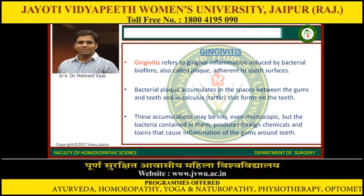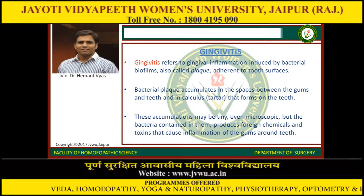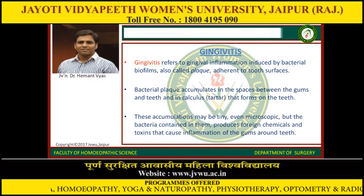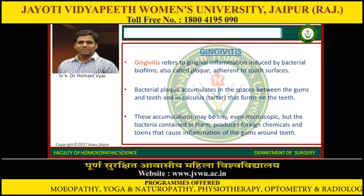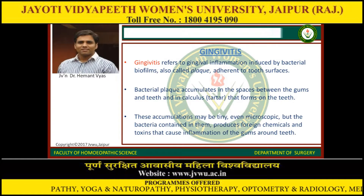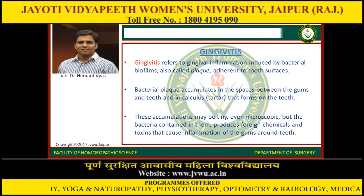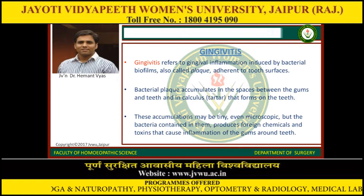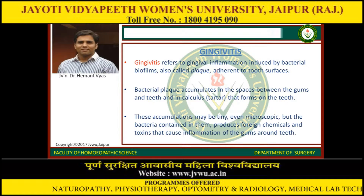The first disease of gums is gingivitis. Gingivitis refers to gingival inflammation induced by bacterial biofilms, also called plaque, which adhere to the tooth surface. Bacterial plaque accumulates in the spaces between the gums and teeth, and in calculus — that is, tartar — that forms on the teeth. These accumulations may be tiny, even microscopic, but the bacteria contained in them produce chemicals and toxins that cause inflammation of the gums around the teeth.